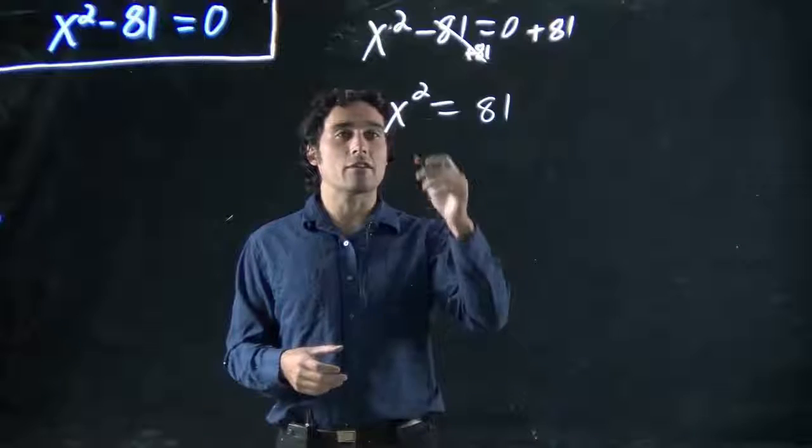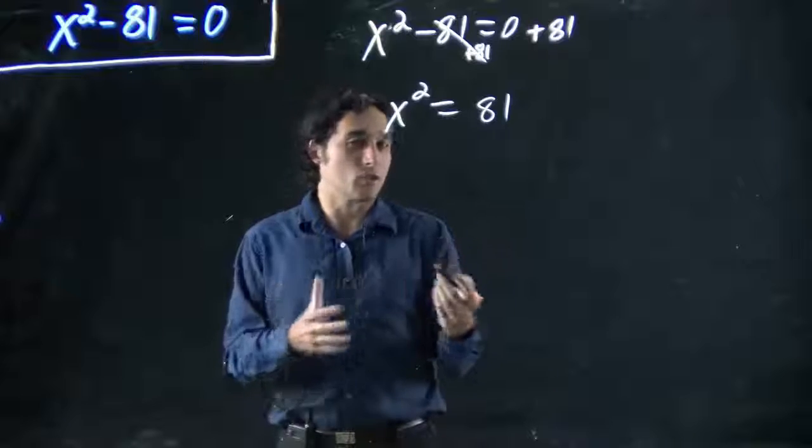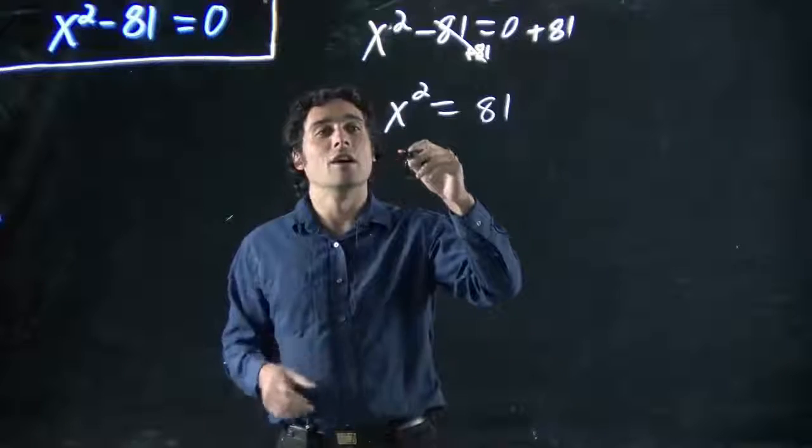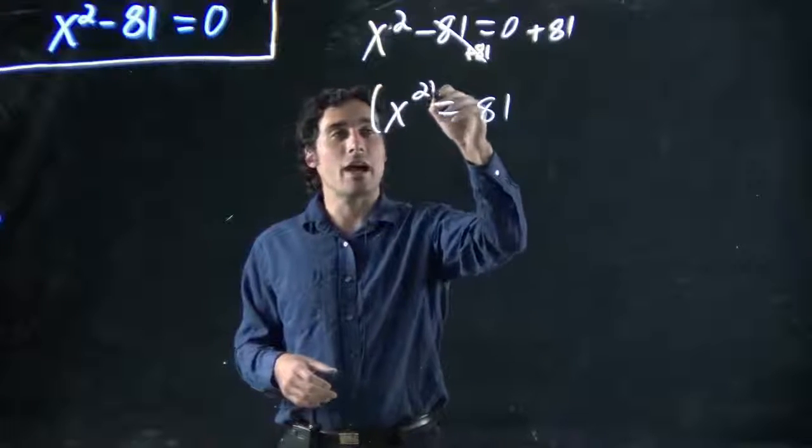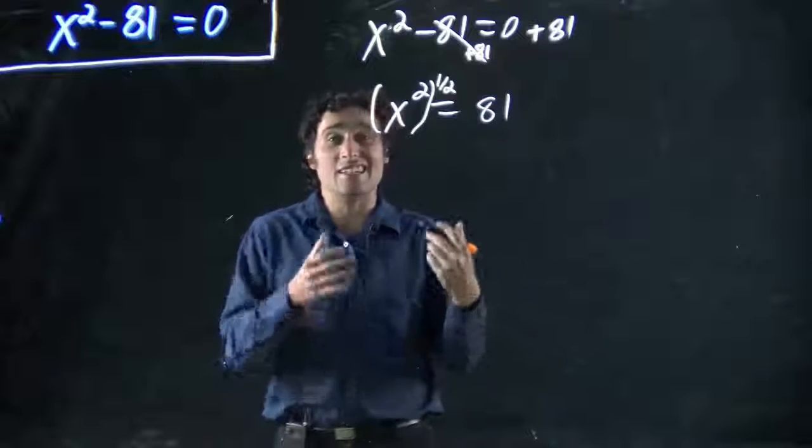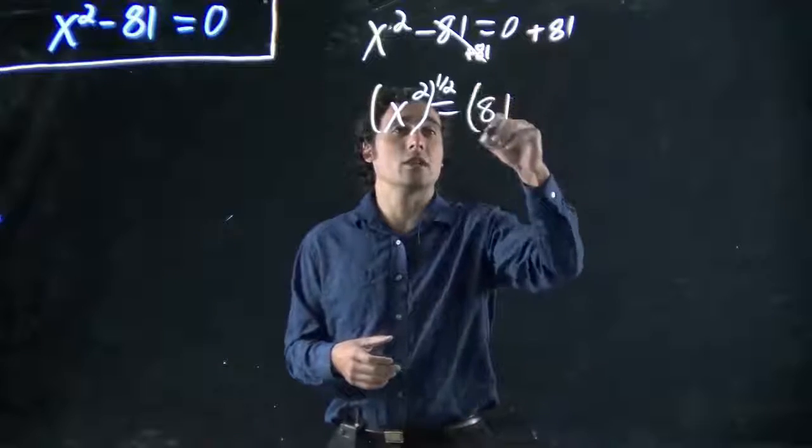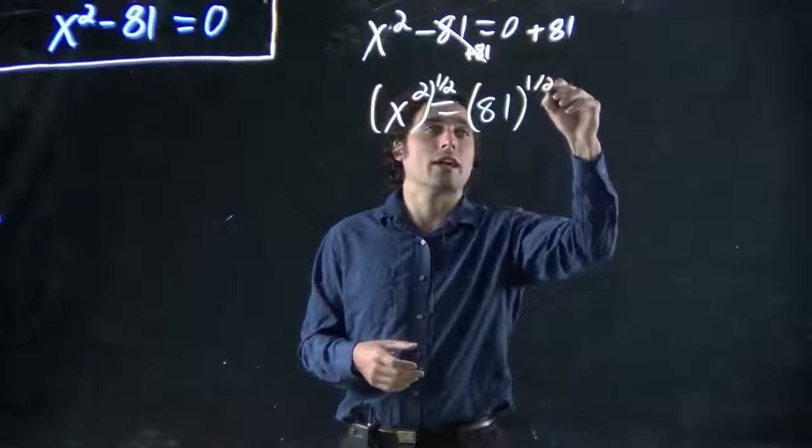When we want to get rid of an exponent, what we actually do is put it to the power of the inverse of the number. So we actually want to put this to the power of one half. Putting it to the power of one half actually is the same as square root. When we do square root, that's what we're actually doing: putting it to the power of one half.